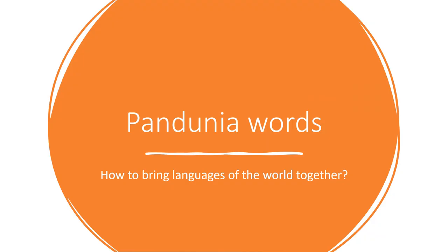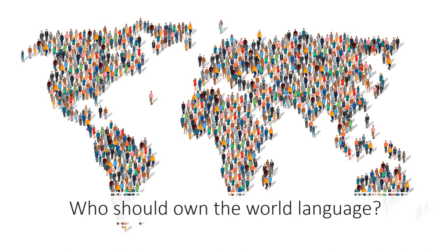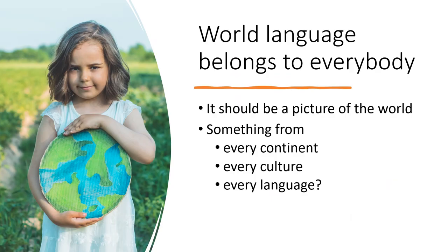So let's start looking at Pandunia at the level of words. The big question is how to bring the languages of the world together at the level of words. The fundamental question is: who should own the world language? The stance of Esperanto and other international languages made in the West is that the world language belongs to Western people only, and everybody else can join international communication if they learn a Western language. In my opinion, this point of view is completely wrong. Everybody in the world is equally important, and everybody has the right to be represented in the world language. The world language belongs to everybody.